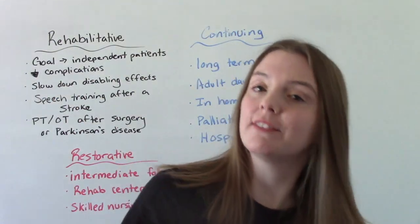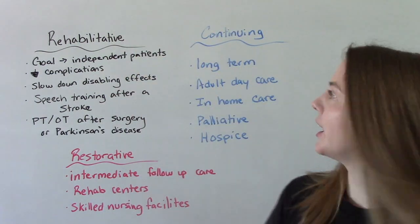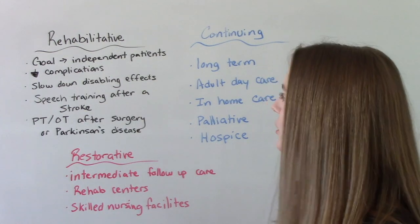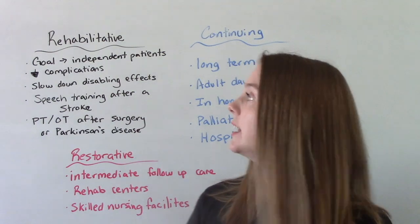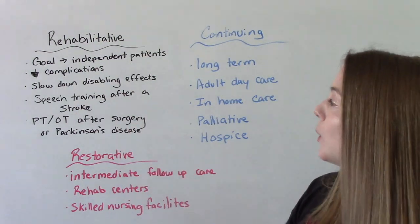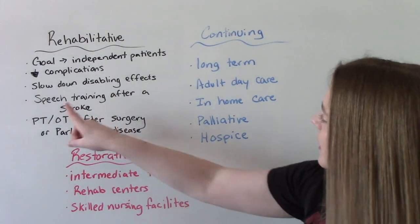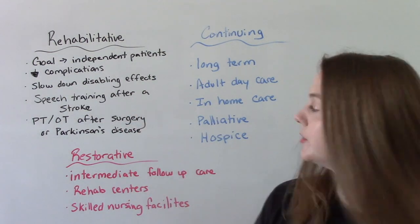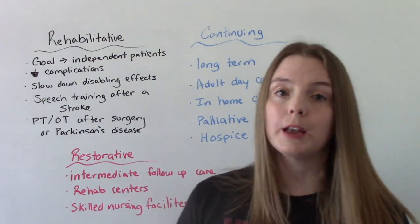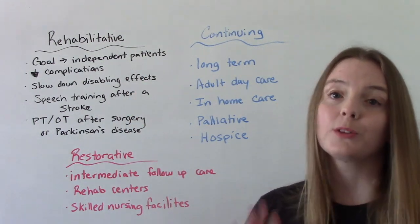Now that we've gone through the first three levels, we're going to talk about more specialized types of care. Starting with rehabilitative care — the overall goal of this type of care is to make our patients as independent as possible. Our big goal is independence and to decrease any potential complications that might occur or slow down any disabling effects of their illness or injury. Some examples include speech training for a patient who's had a stroke, or physical therapy and occupational therapy for patients recovering from knee surgery or hip surgery, or those who have Parkinson's disease. Physical therapy and occupational therapy can help promote independence in these patients.